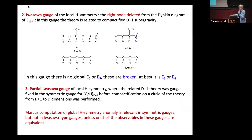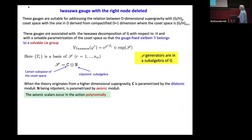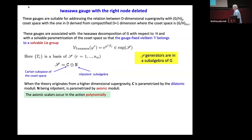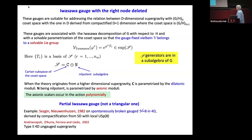In Iwazawa gauge, when you delete the right node, you have a solvable algebra, and the generators and corresponding scalars are in the subalgebra. But there is always a nilpotence of the algebra, and therefore some of them are always polynomial, because they remember the origin from higher dimensions. And there is some information in partial Iwazawa.